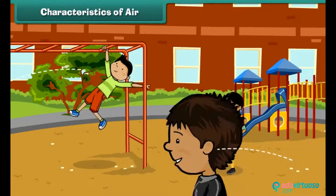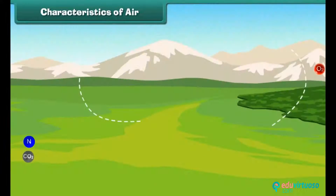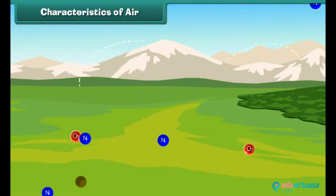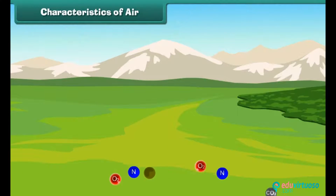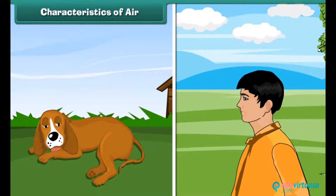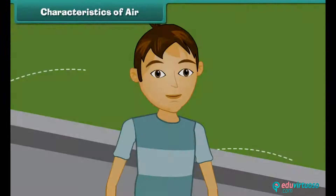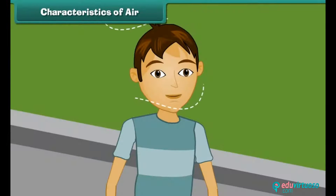We are surrounded by air. Air is a mixture of gases and other particles. It is essential for the survival of living things. All living things breathe in and breathe out air. It has no taste, color, or odor. We cannot see it but we can feel it.